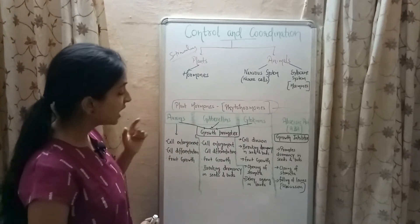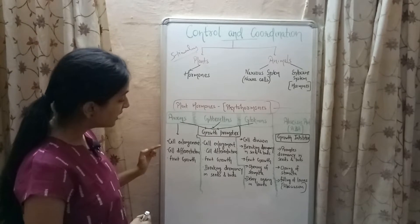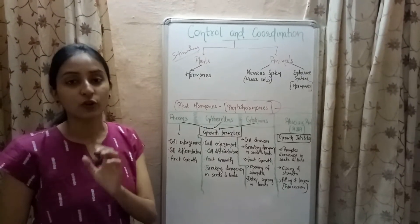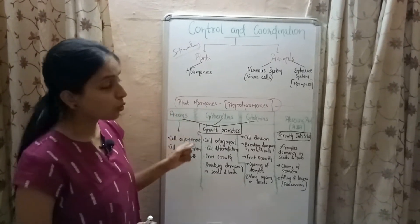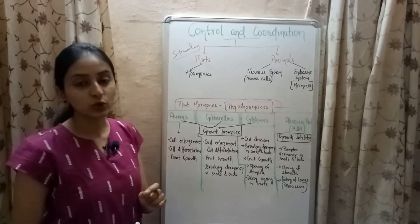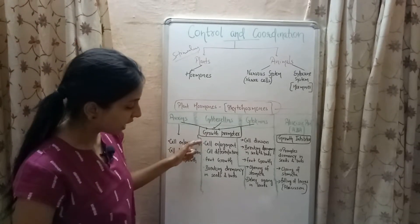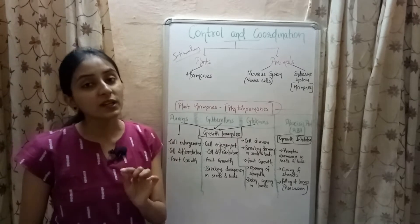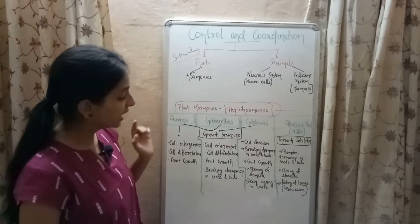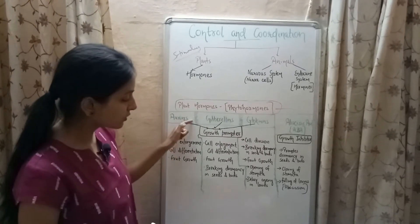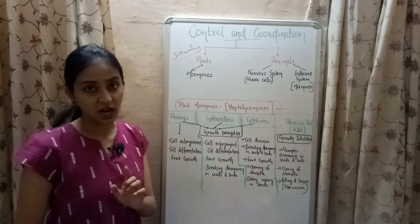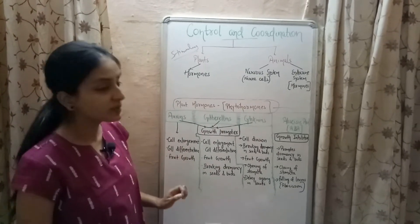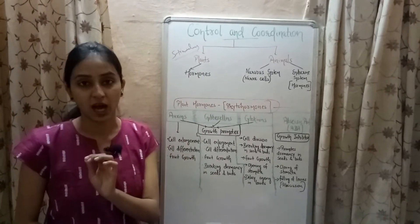Auxins promote cell enlargement, cell differentiation, and the growth of the fruits of the plant. Gibberellins also promote cell enlargement and cell differentiation, but only in the presence of auxins. Gibberellins also promote the growth of fruits and plants, and help in breaking dormancy in seeds and buds.